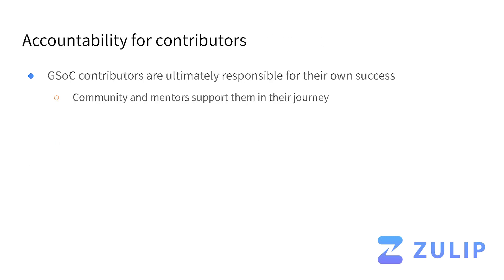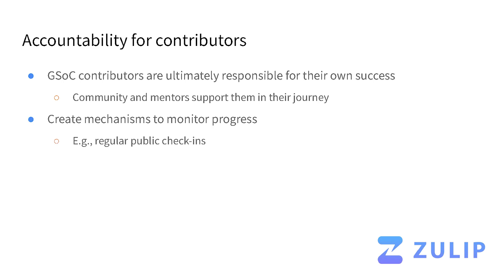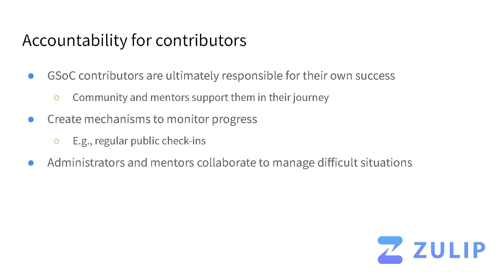Our philosophy is that GSoC contributors are ultimately the ones responsible for their own success — the community and mentors are there to support them, but the responsibility is ultimately their own. To help folks be successful, we create mechanisms to monitor progress and try to catch problems early. One thing that works very well is regular public check-ins, which have a dual purpose: not only will we see if someone is not being very productive, they're also a great way for contributors to let us know when they have a question or feel stuck. We can discuss what they're planning to work on next and make sure everybody's aligned, with administrators and mentors collaborating to manage any difficult situations.